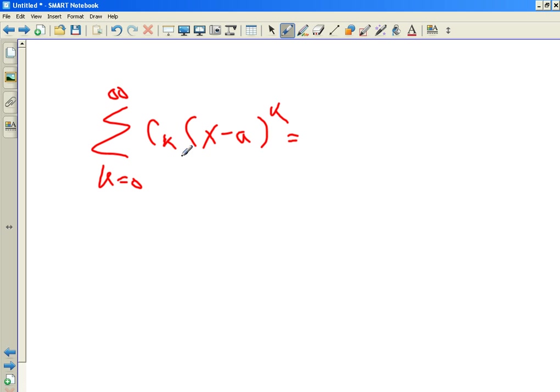So what do you get? Well plug in k equals 0. You get something to 0 is 1, c0 some constant, plus plug in k equals 1, some other constant c1 this thing to the 1, plus c2, plus c3. I'm running out of space here so c3, plus plus plus okay.